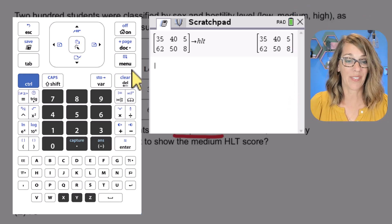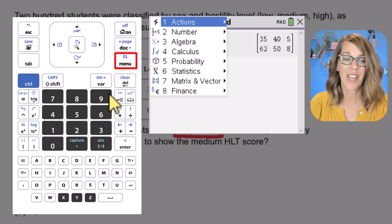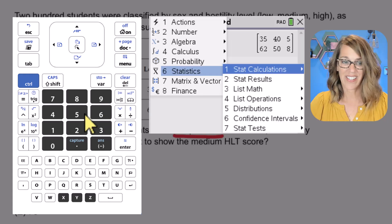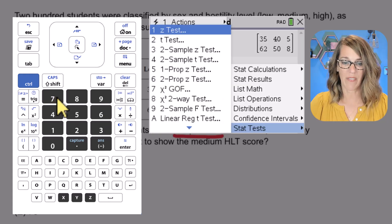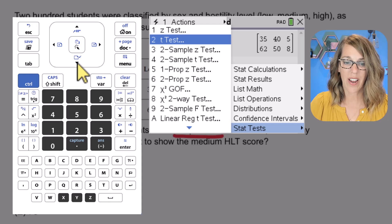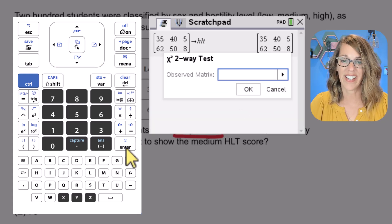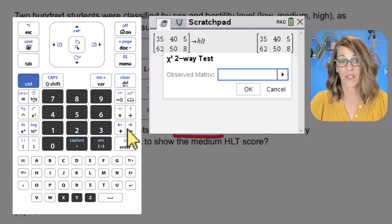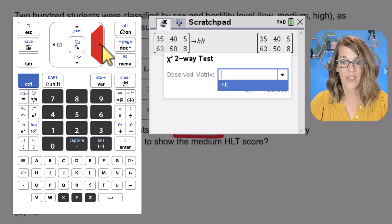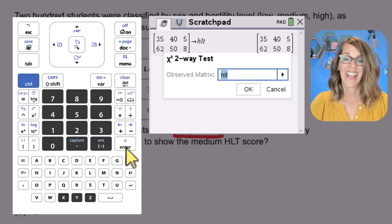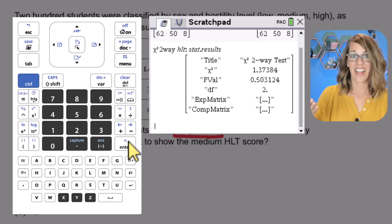To do that, we're going to run our test. I want to go to menu. This time I want statistics and stat test, which is number seven, and then we want that chi-square two-way test, which is number eight. I've got it selected, so I will hit enter. They want the observed matrix. I'm going to use my right arrow to get that observed matrix and then enter to select it. Enter again runs the test.